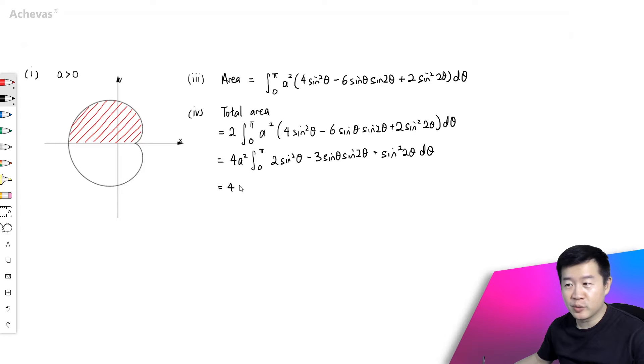So this is going to be equal to 4a² integrating from 0 to π. This, we will make use of the double-angle formula, trigonometric identity, changing this to 1 minus cosine 2θ.